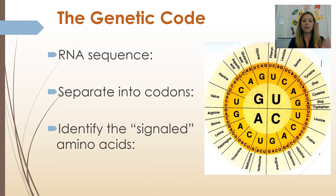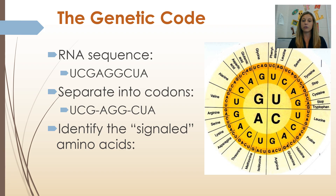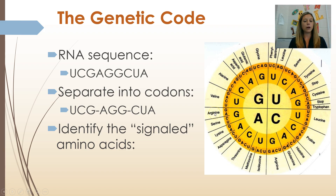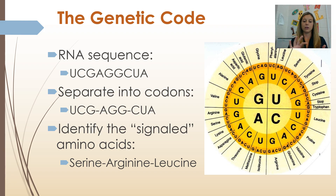If your RNA sequence is this, it would get read three bases at a time — those are called codons. You're going to use the codon chart to figure out what amino acids are signaled by these particular codons, reading from the middle working outward. Our first codon is UCG — start with U in the middle, go to C, go to G — that codon signals for serine. The next codon, AGG, signals for arginine. And then CUA signals for leucine. So those three codons signal for serine, arginine, and leucine.